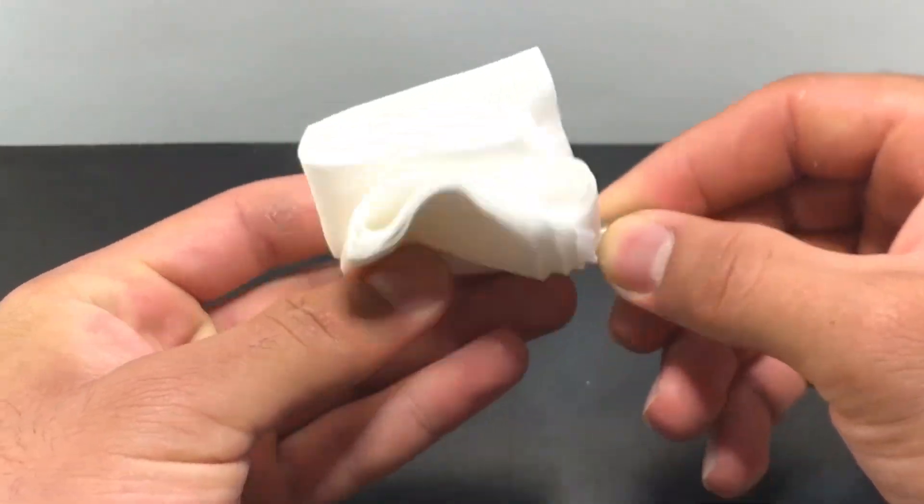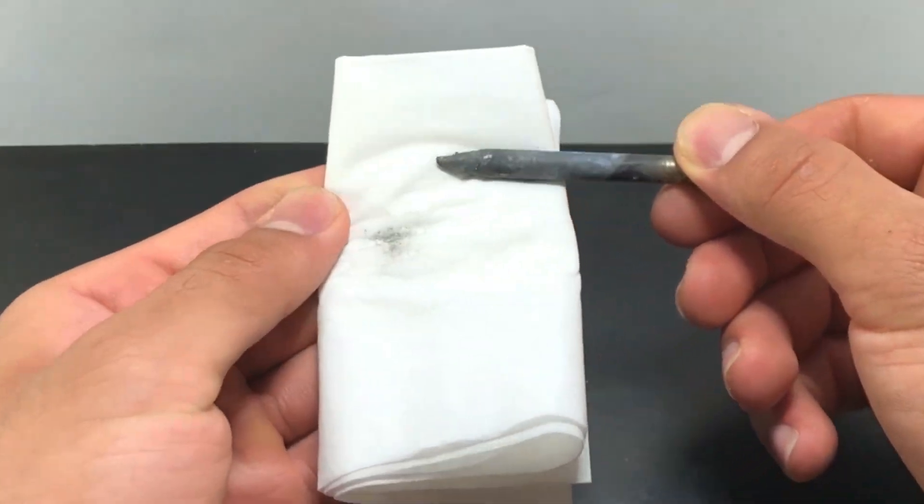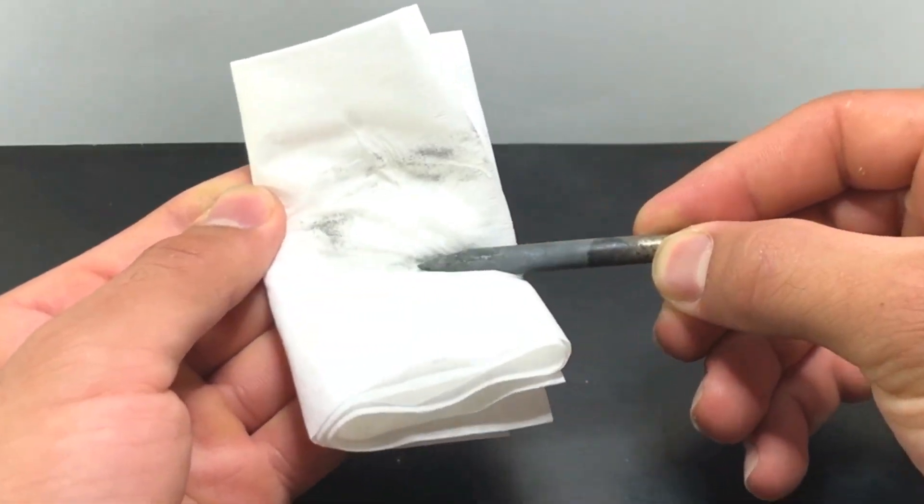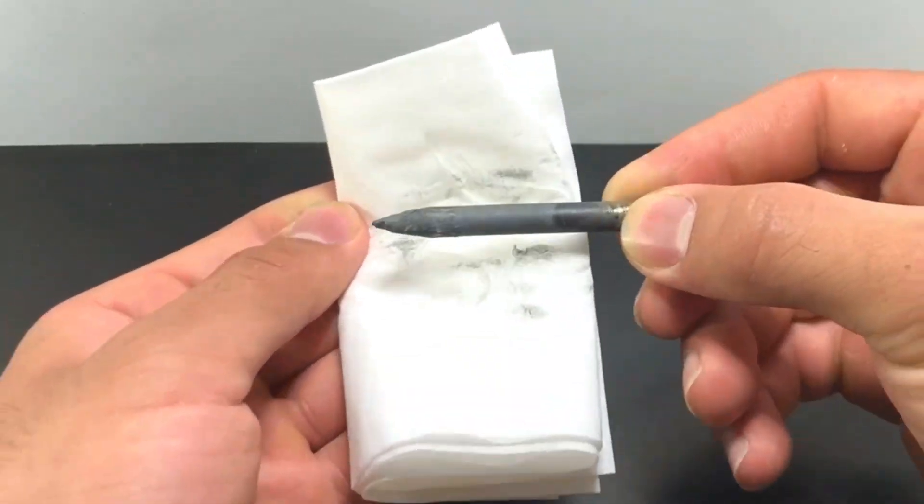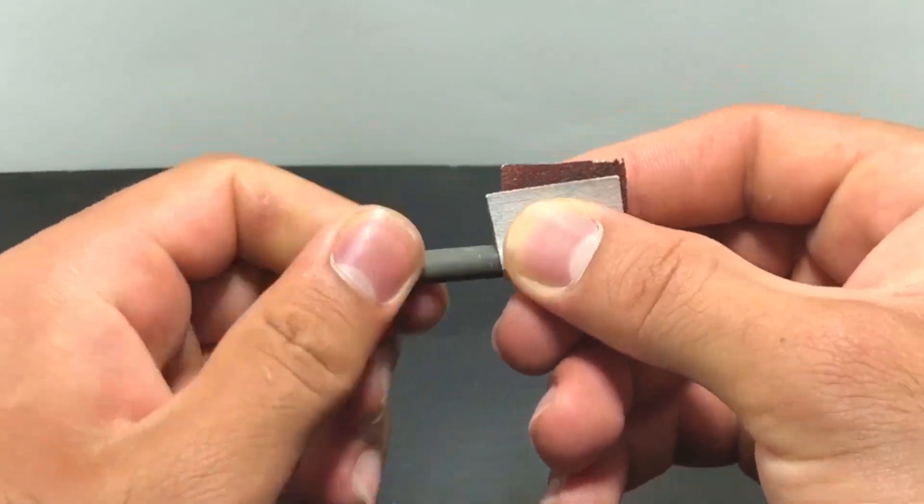We clean the rod of the soldering iron and we polish it with sandpaper.